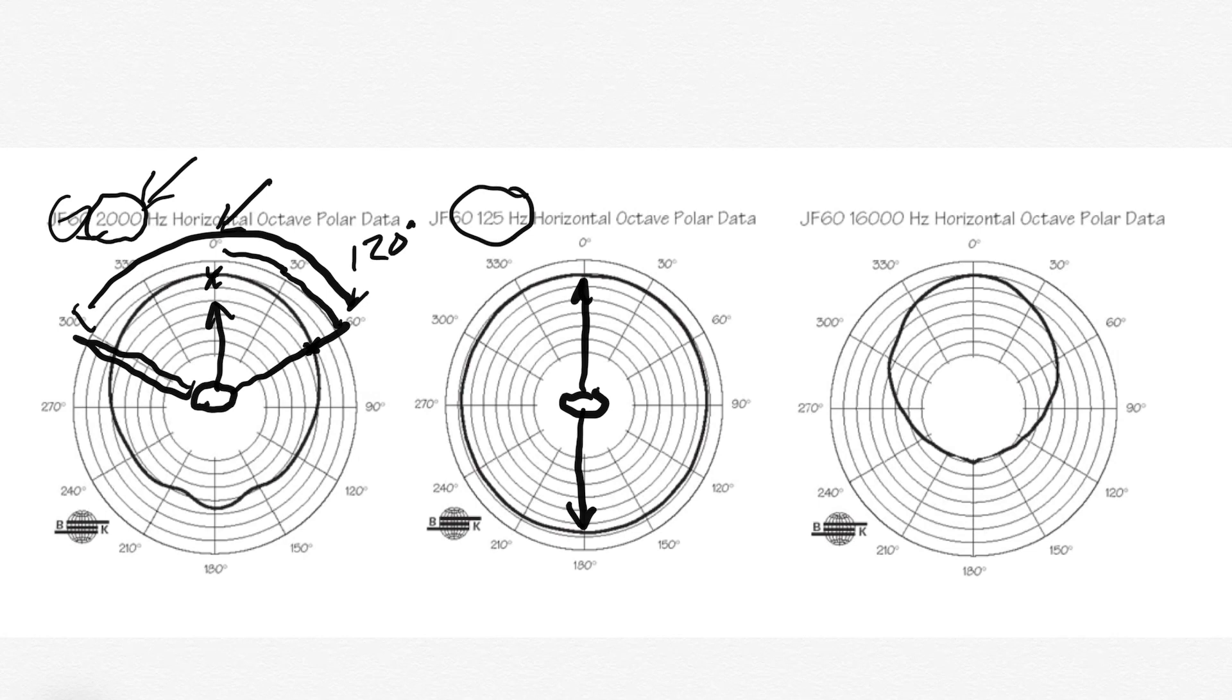So the higher the frequencies go, the smaller the sound waves get, the more we block it. The lower the frequencies go, the larger the sound waves get, the less that medium blocks out. So down here at 125 hertz, it doesn't block out those frequencies towards the back of the loudspeaker.